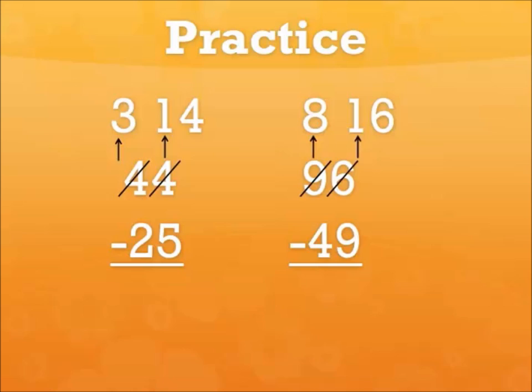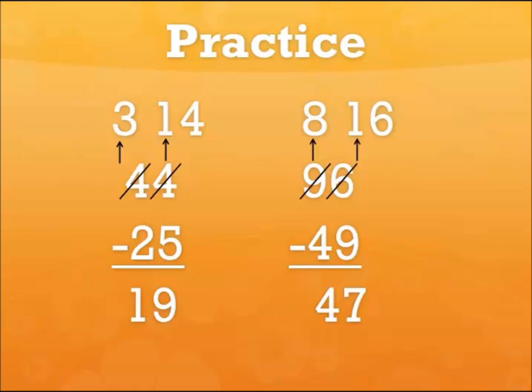Let's see if you got them right. These are the answers we came up with. Forty-four minus twenty-five equals nineteen. And ninety-six minus forty-nine equals forty-seven. I think that's all we have for you today. Thanks for learning this with us. We couldn't have done it without you. Bye! Bye!